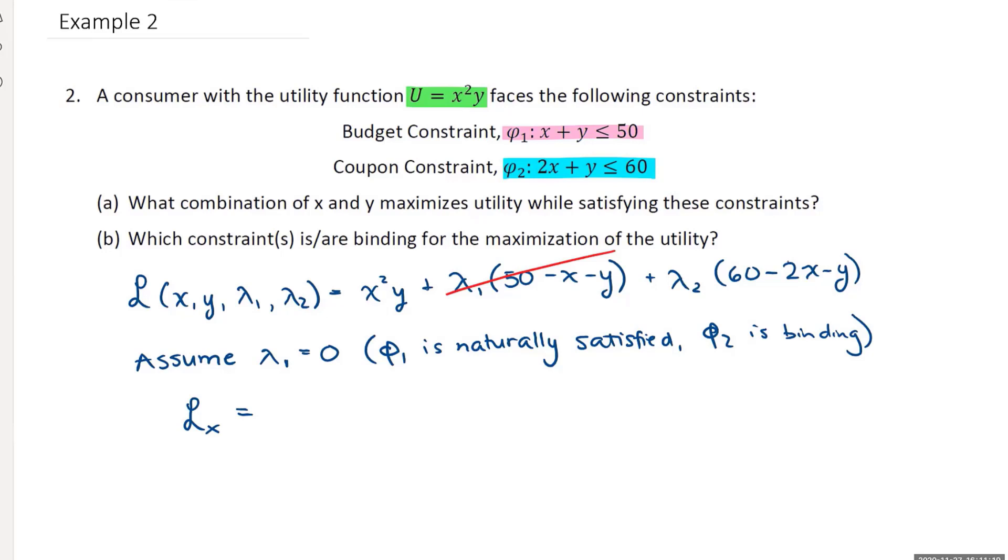Doing my partial derivative with respect to x, I get 2xy plus lambda 2 times the derivative of negative 2x is negative 2. Doing the derivative with respect to y, I get x squared plus lambda 2 times the derivative of negative y, which is negative 1. And doing the derivative with respect to lambda 2, I get 60 minus 2x minus y.